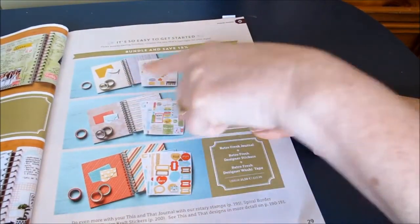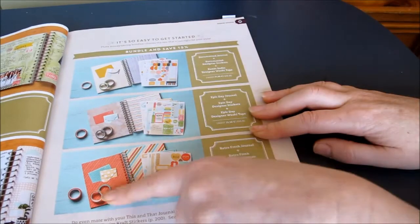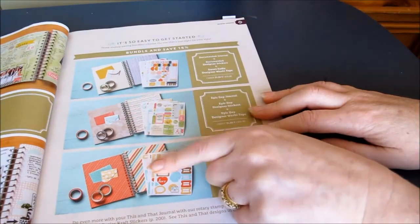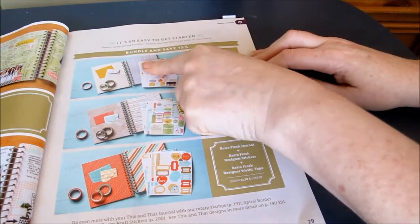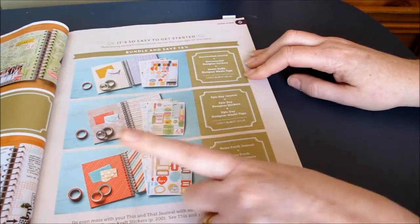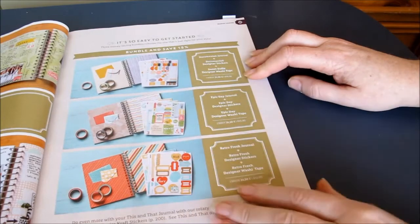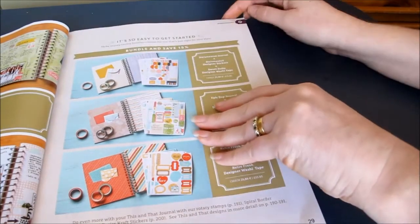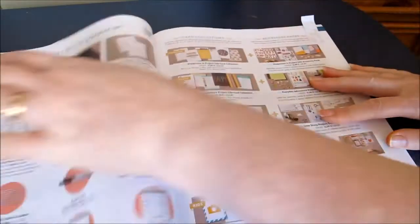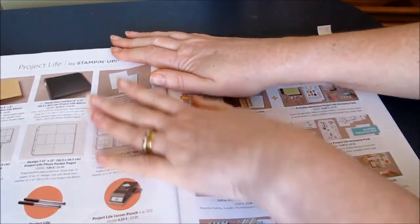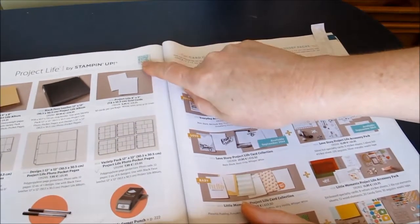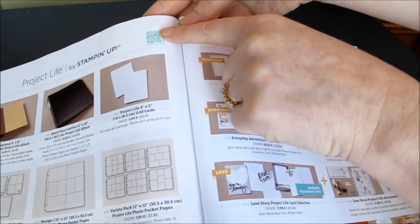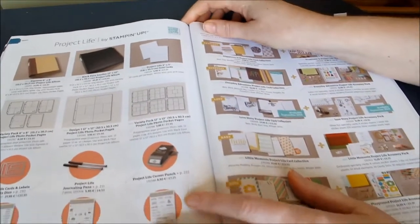This shows some of the sets with the accessory sets that you can buy, with the washi tape sets that you can buy. They've got pockets in them. Really nice journals. That one's Documented journal. Epic Day journal. Retrofresh journal. So really it's the colourways that you want to choose. So if we then go back further back in the catalogue, you've got one of those images there that you can click on with your mobile phone to get more information online.